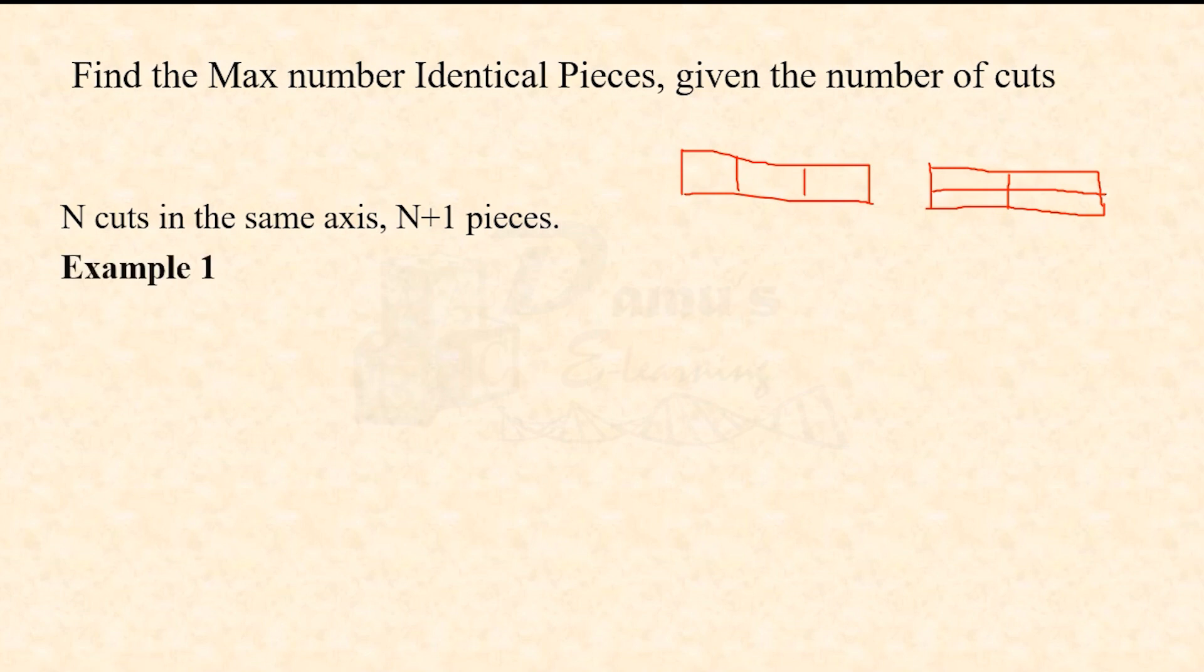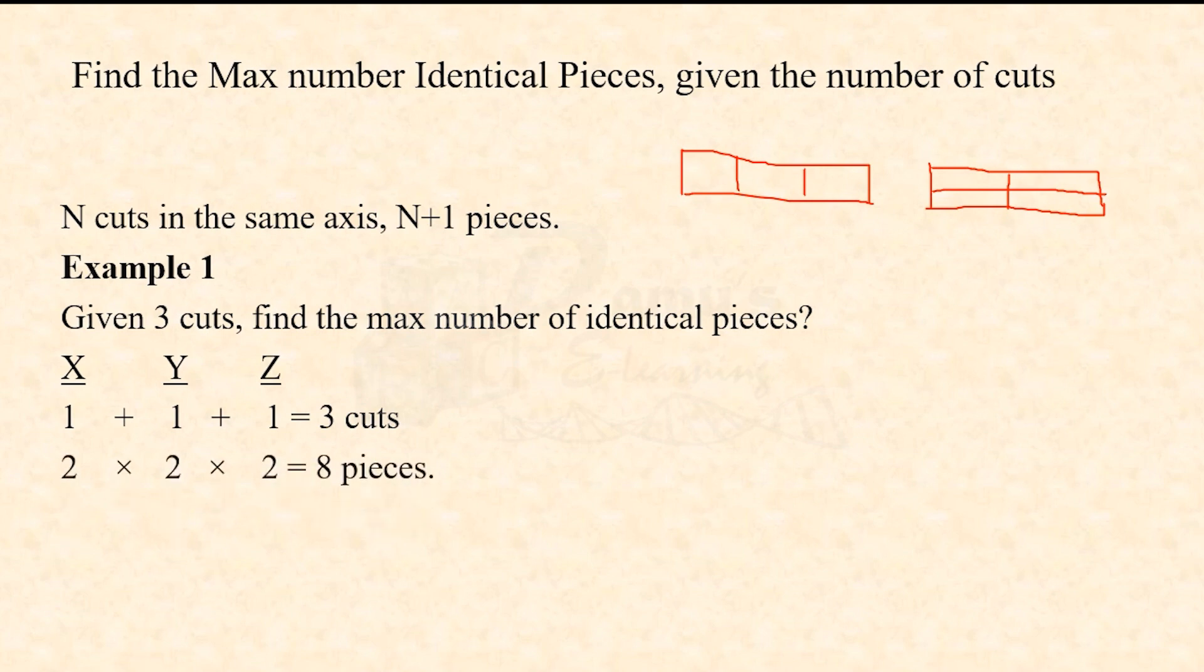Given three cuts, find the maximum number of identical pieces. Three cuts: first we need to distribute among three axes - X, Y, and Z. Since it is three cuts, 1+1+1, and one cut will give you two pieces. So along X it is 2, Y it is 2, Z it is 2, so 2×2×2 equals 8 pieces. With three cuts we'll get a maximum of 8 identical pieces, and in case it is minimum, it will get 4 pieces.